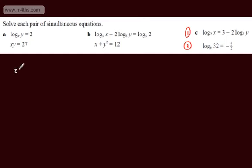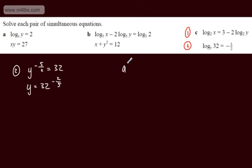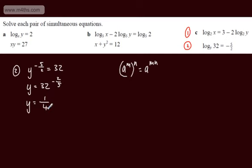This time I'm going to start with equation 2 and write the exponential equivalent. The exponential equivalent is y to the power of minus 5 over 2 equals 32. Therefore, raising both sides to the power of minus 2 over 5, we get y equals 32 to the power of minus 2 fifths. Using the index law a to the power of m raised to n equals a to the power of m times n, this gives y to the first power. Taking the fifth root of 32 gives 2, squaring gives 4, and with the negative we get y equal to 1 quarter.